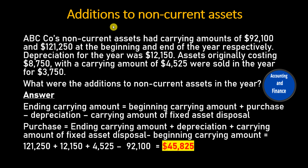Additions to non-current assets. ABC Co.'s non-current assets had carrying amounts of $92,100 and $121,250 at the beginning and end of the year respectively. Depreciation for the year was $12,150.